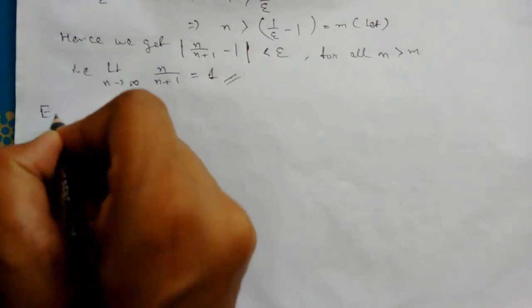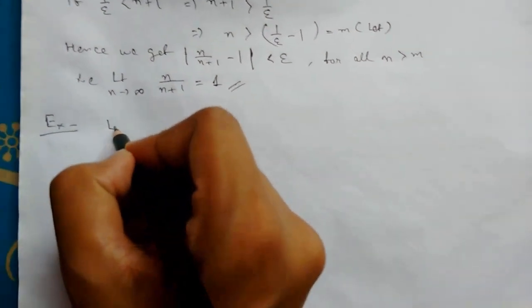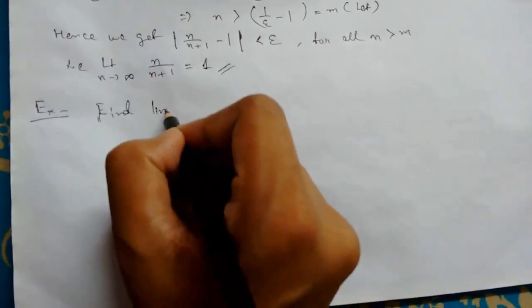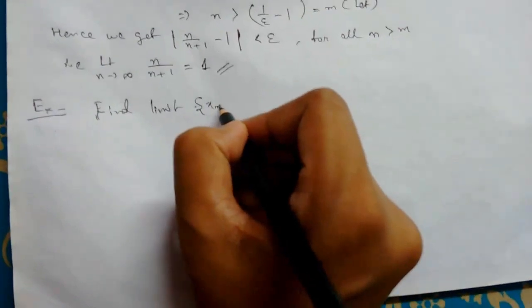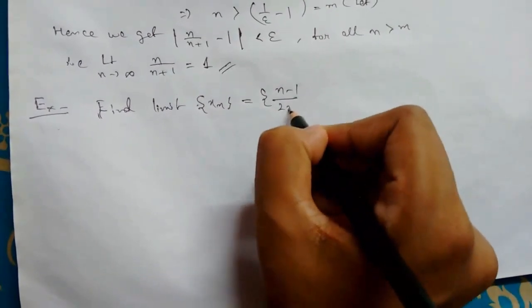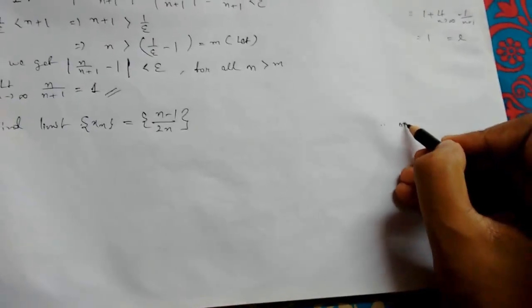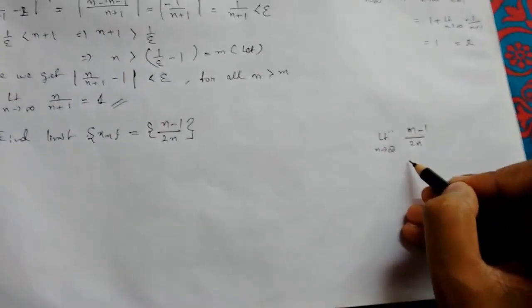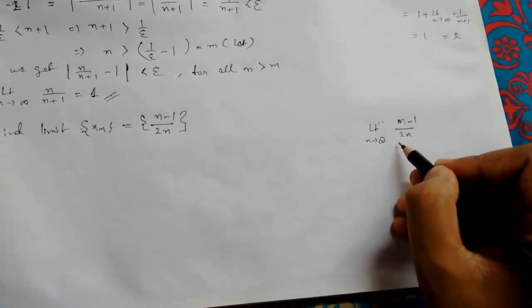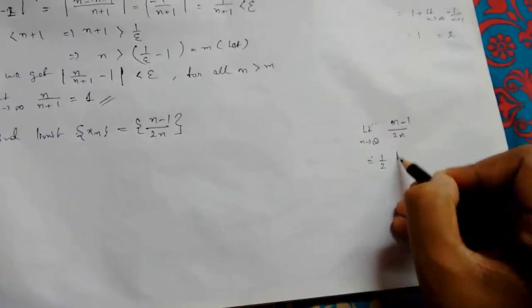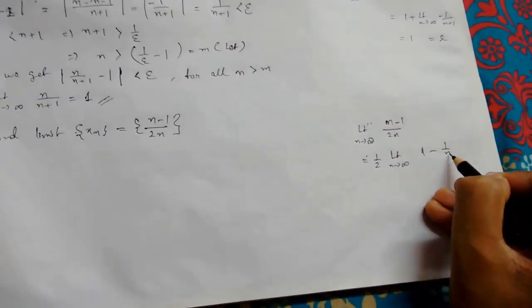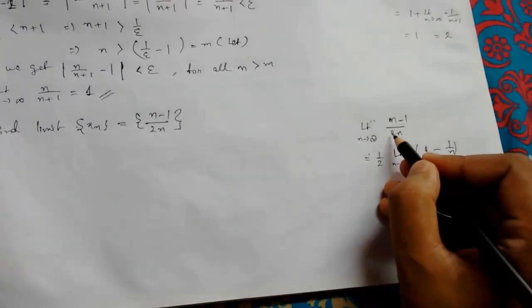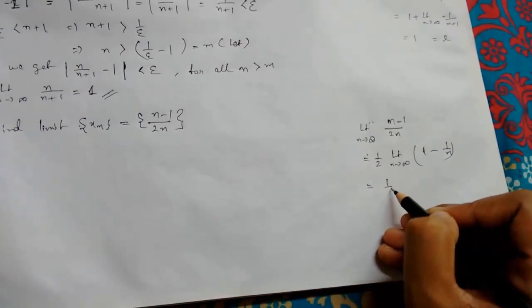Now let us see another example to make it more clear. Find the limit of the sequence where x_n = (n−1)/(2n). First, again, we calculate the rough answer: limit as n tends to infinity of (n−1)/(2n). Simplifying — taking 1/2 as a common factor — this becomes (1/2) · limit of (1 − 1/n) as n→∞. Putting in values, this gives 1/2 · 1 = 1/2. So our L = 1/2.